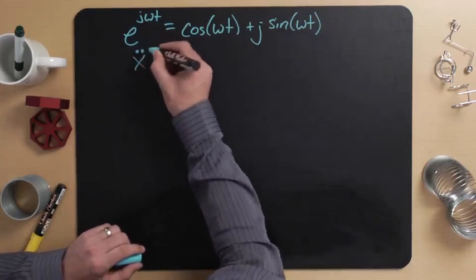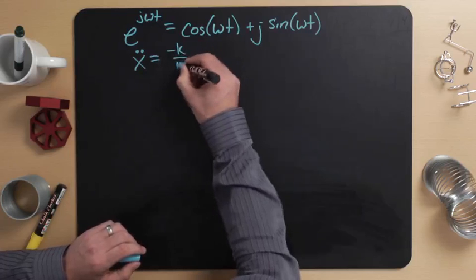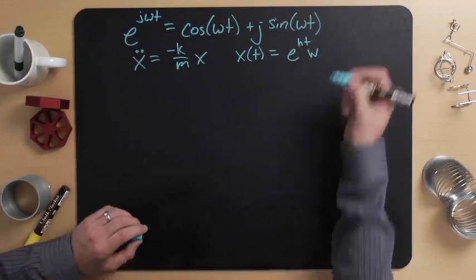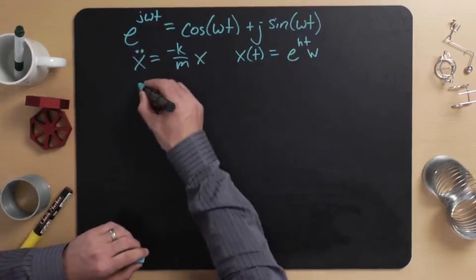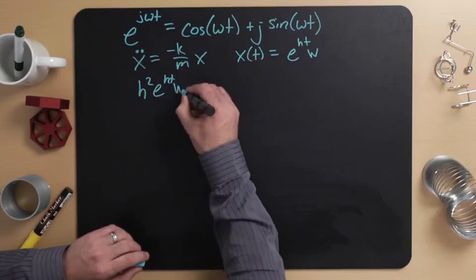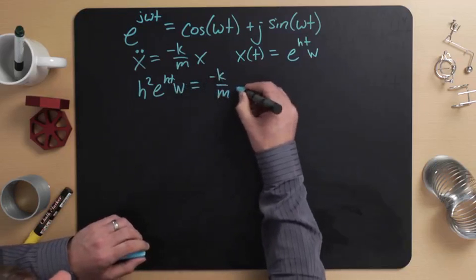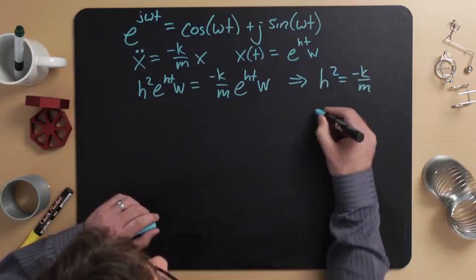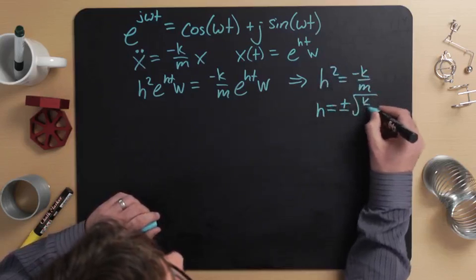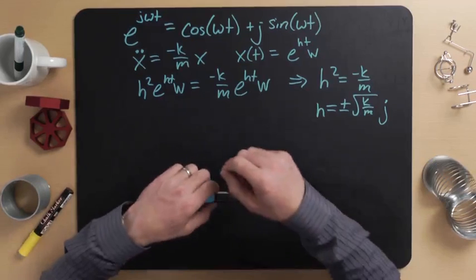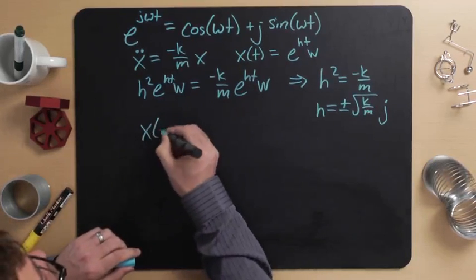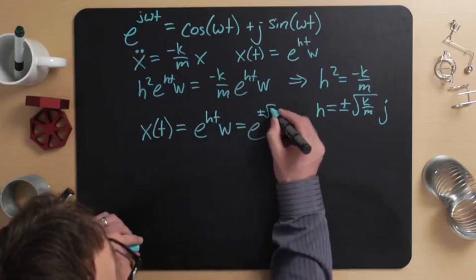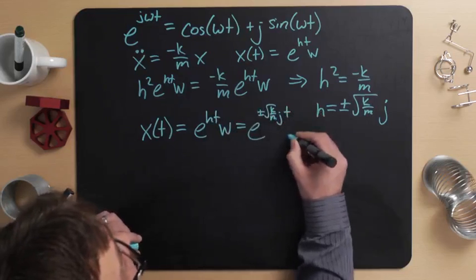For instance, if I have just our spring-mass system, x dot dot equals minus k over m times x, and I assume an exponential solution x of t equals e to the ht times w, where w is some constant, then plugging into the differential equation I find h squared e to the ht w equals minus k over m e to the ht times w. This implies h squared equals minus k over m, which implies h equals plus or minus the square root of k over m, all times j.